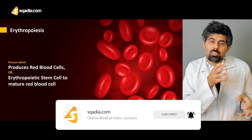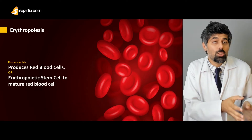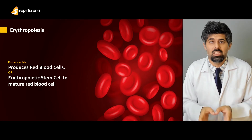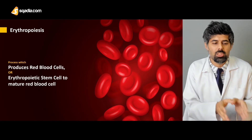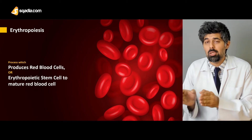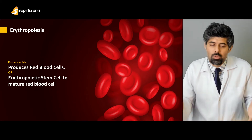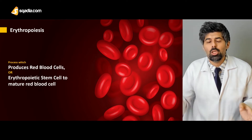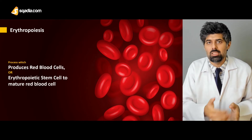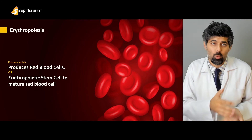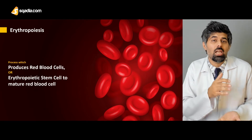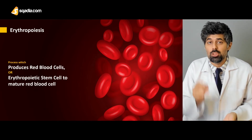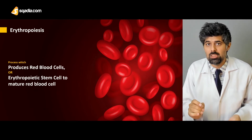In medical terms, erythropoiesis is the process via which we produce matured red blood cells. Alternatively, it is the process by which an erythropoietic stem cell is converted into a matured red blood cell. Both definitions carry the same meaning — ultimately, it is the process which produces matured RBCs.